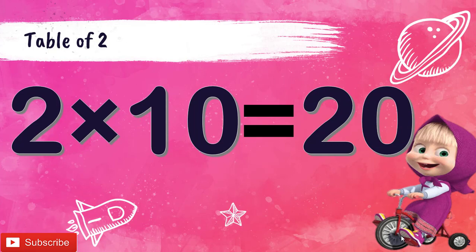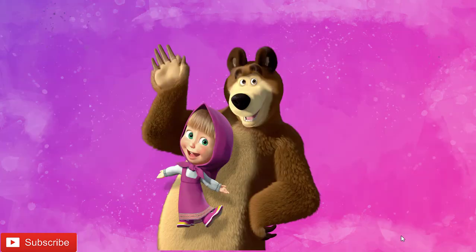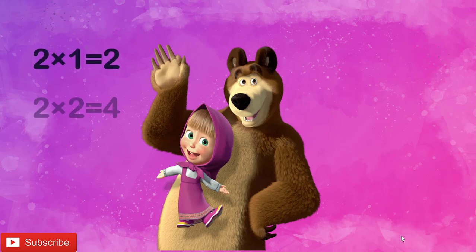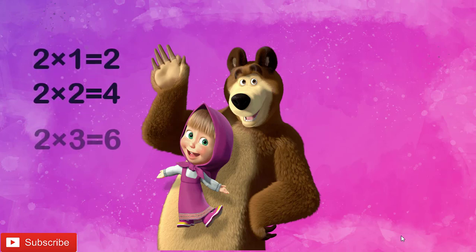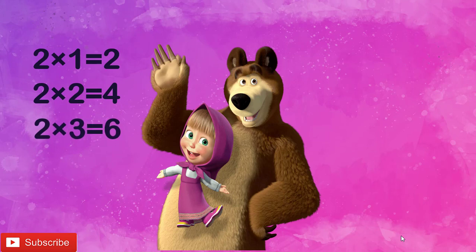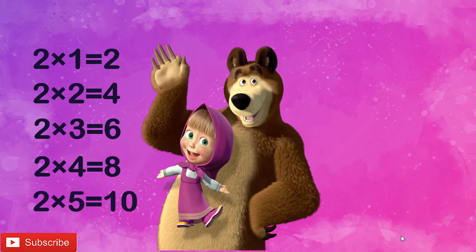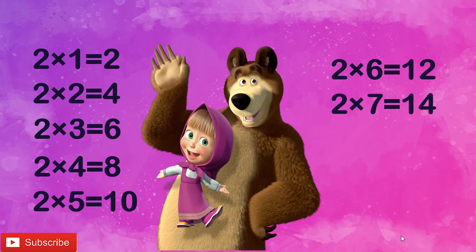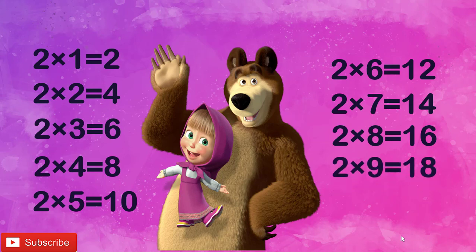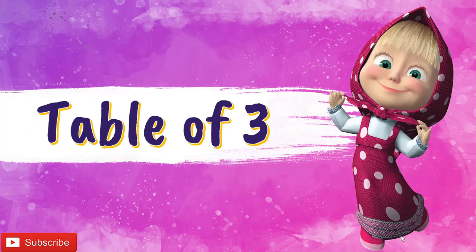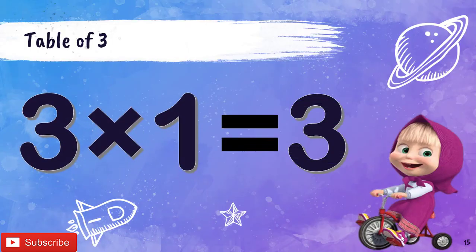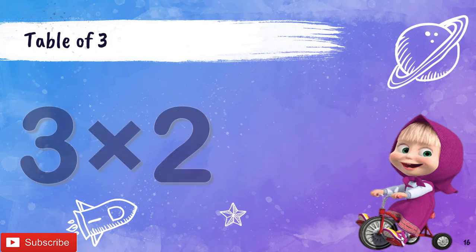Now let's revise once children. 2 1's are 2, 2 2's are 4, 2 3's are 6, 2 4's are 8, 2 5's are 10, 2 6's are 12, 2 7's are 14, 2 8's are 16, 2 9's are 18, 2 10's are 20.